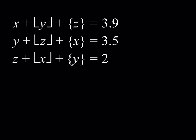We have x plus the floor value of y plus the fractional part of z is equal to 3.9, and all the other equations are given. So basically, we're talking about two different functions here: the floor function and the fractional part of a number.